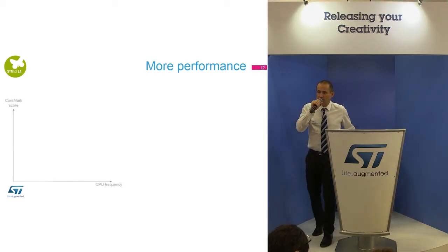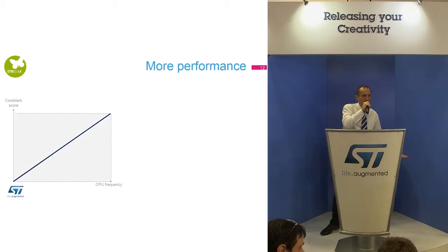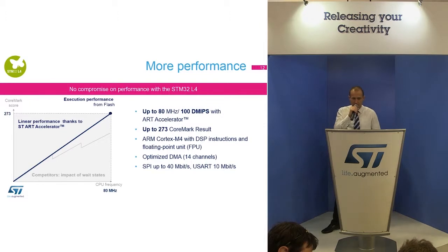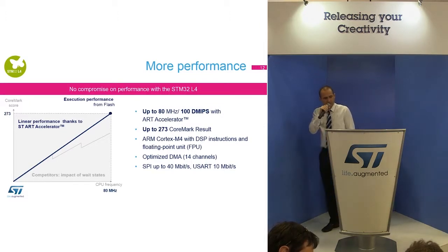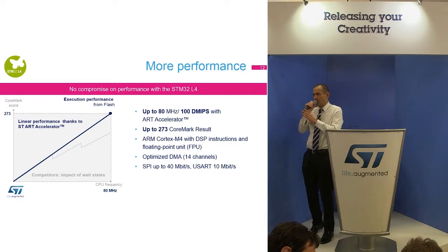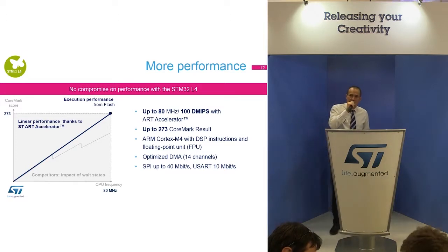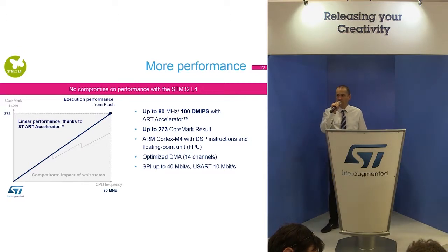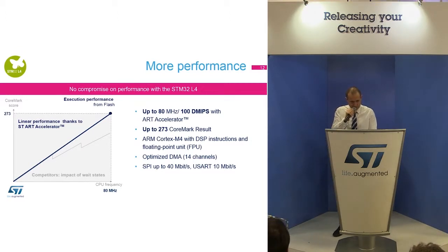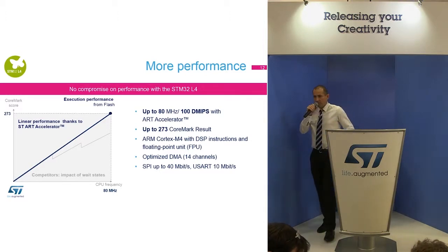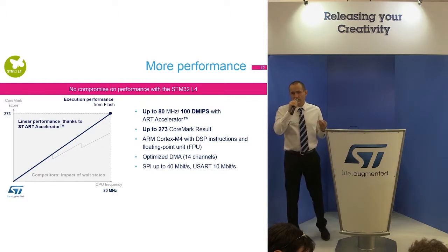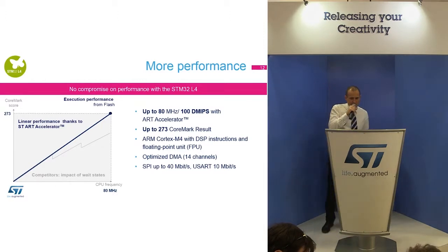The STM32L4 truly combines ultra low power and performance. You don't compromise on performance — it's a Cortex-M4 with floating point unit and DSP instructions, reaching 100 DMIPS and 273 CoreMark. Also, it features optimized DMA and very fast peripherals: SPI up to 40 megabits per second and USB at 10 megabits per second.